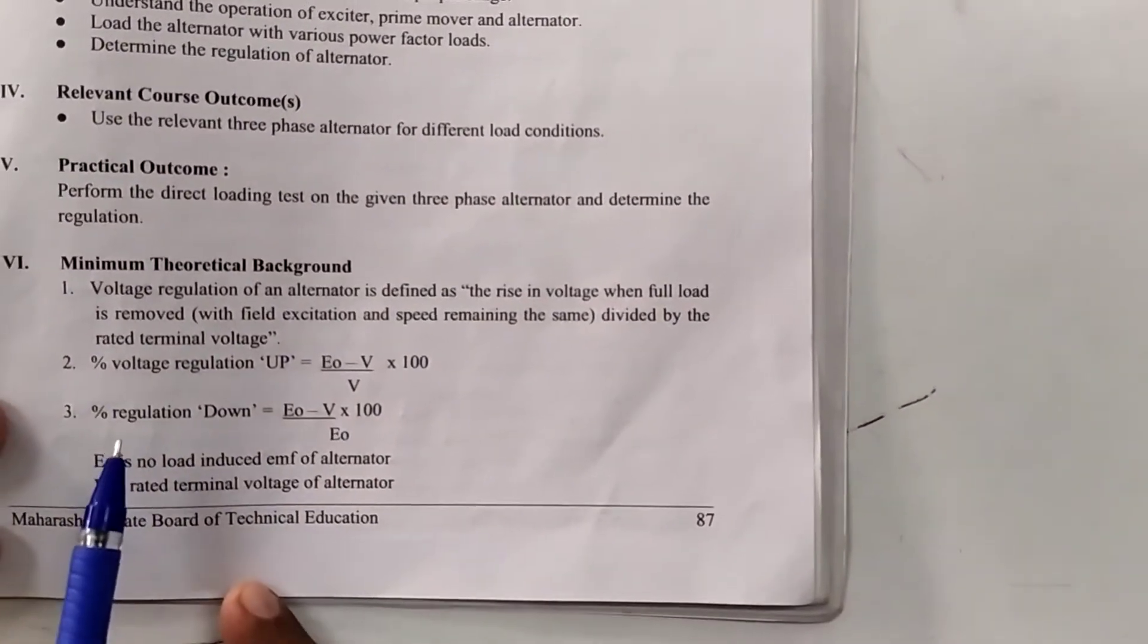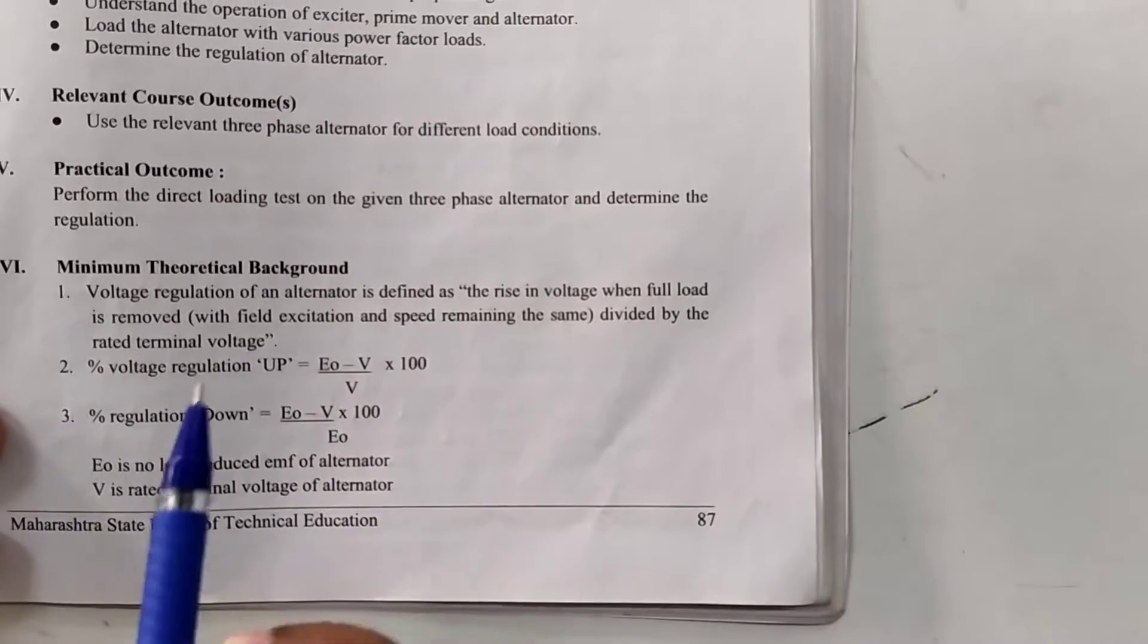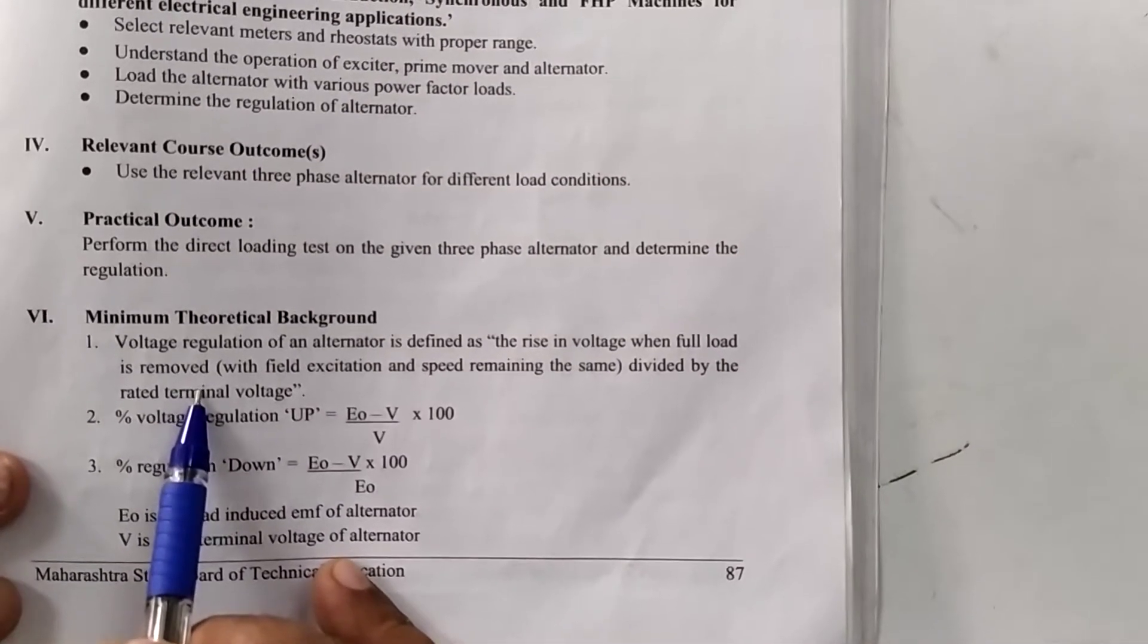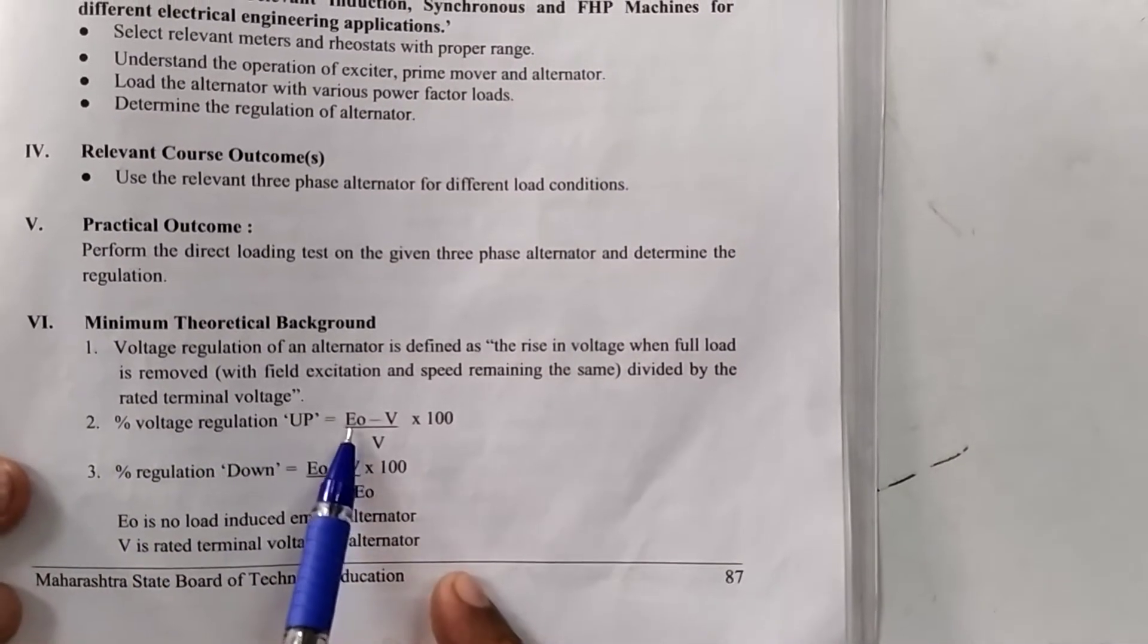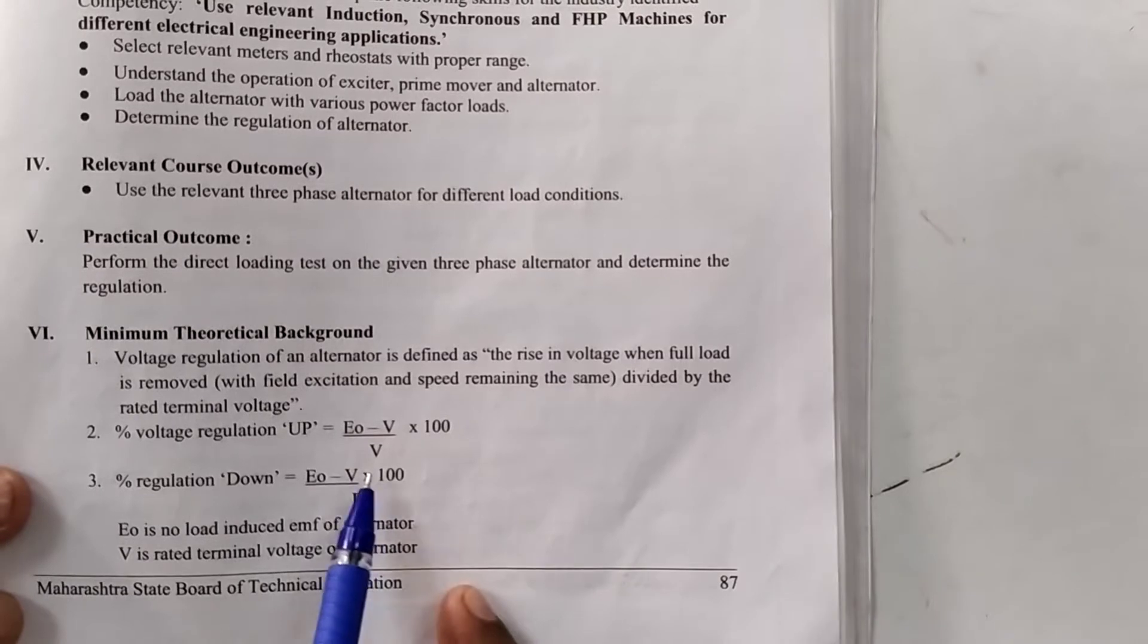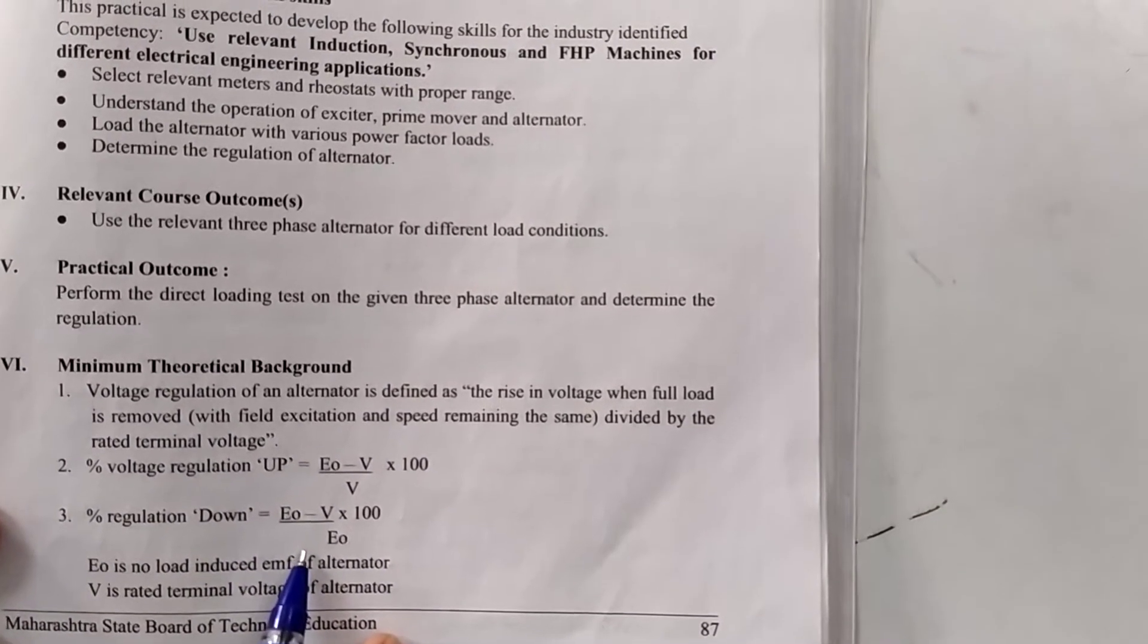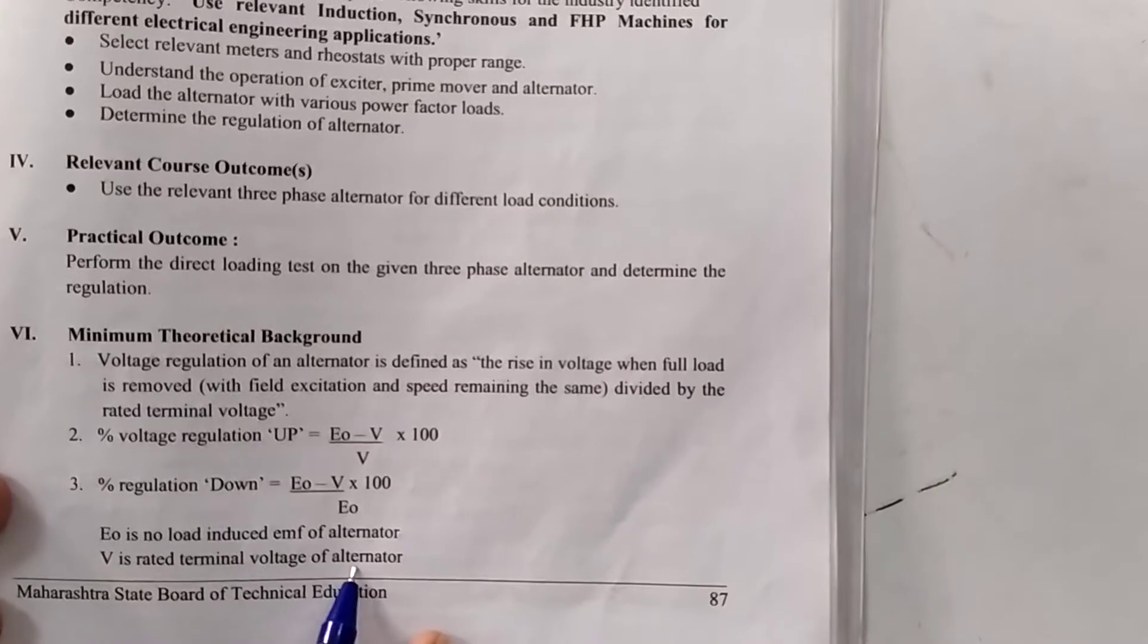Now theoretical background is minimum required for this practical. We know that the voltage regulation up and voltage regulation down. Regulation is defined as the rise in voltage when full load is removed. Percentage voltage regulation up means E0 minus V divided by V. And regulation down is E0 minus V upon E0. E0 is no load induced EMF of alternator and V is rated terminal voltage of alternator.